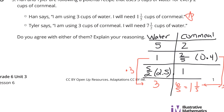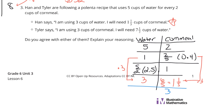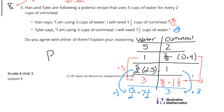Tyler is using 3 cups of cornmeal, so we use the 1 cup of cornmeal unit rate and multiply by 3. We multiply 5 halves by 3 to get 15 halves. And 15 halves simplifies to 7 and a half — so Tyler is right too. As I said in the spoiler, they're both correct.